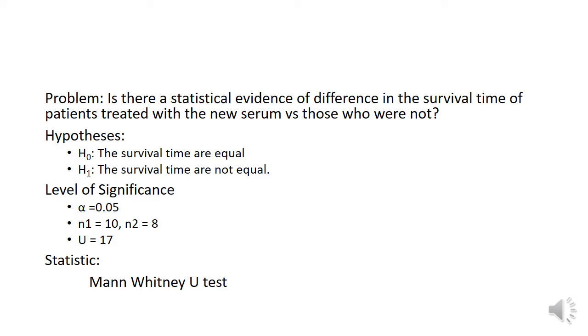For the level of significance, we have alpha equals 0.05. For our N1, we have 10 and N2 equals 8. So our U equals 17, this is our tabular value. For the statistic, we will be using the Mann-Whitney U-Test.